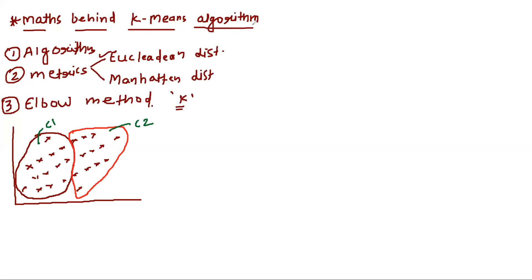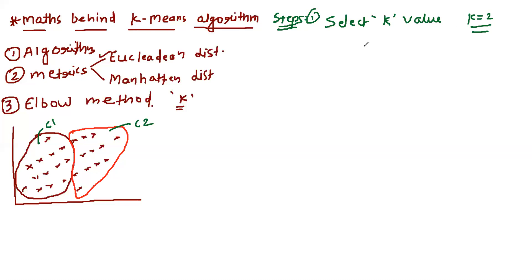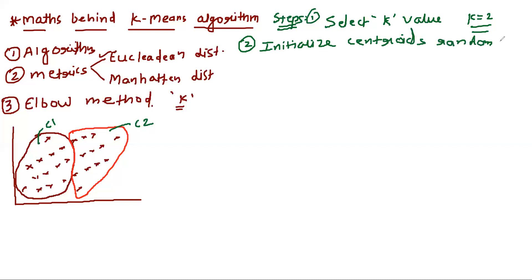Now let's talk about the steps of k-means algorithm. The first step says: select the k value. You can select k as 2, 3, 4 — anything you want. How to decide the k value, we will talk about using the elbow method at the end of this video. Suppose we select k equal to 2, so we will get two clusters at the end. The second step is: initialize centroids randomly.